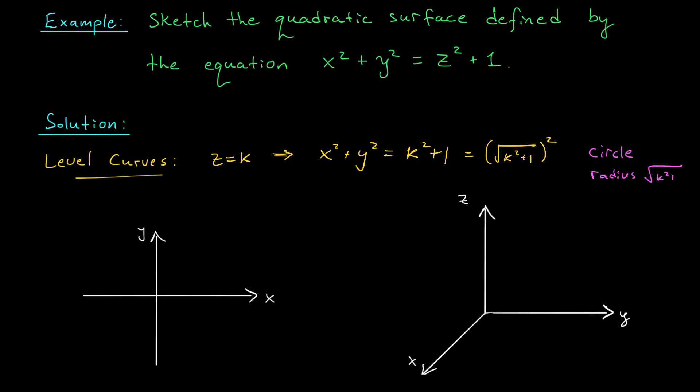So for example, if I slice my graph at a height of k equals 0, I'm going to get a circle of radius 1. Looks something like this. If instead I slice my graph at a height of k equals 1, I get a circle of radius √2. Maybe it looks like this.